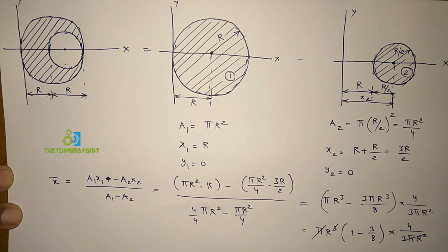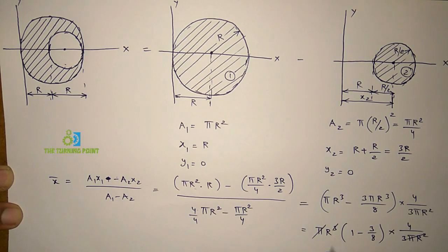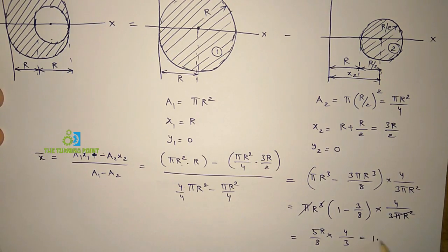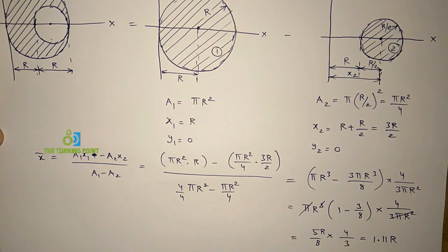So 1 r will be remaining here. So that is 5 by 8 into 4 by 3. So here r is here, 5 r by 8 into 4 by 3. So it will be equal to 1.11 r. So this is the value of x coordinate.